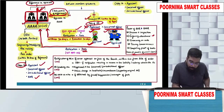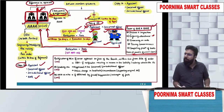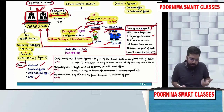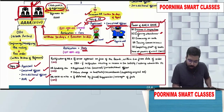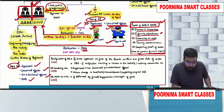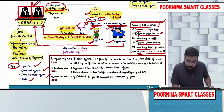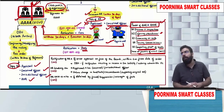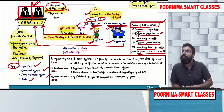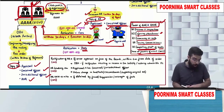Both the AAR and AAAR also have certain powers: they can discover and inspect, enforce attendance, examine on oath, issue commissions, and compel production of books. Basically, they have all the powers of a civil court.